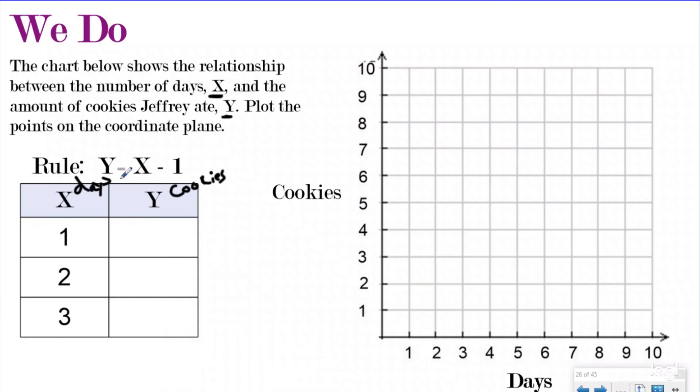Sometimes they're going to tell you what the pattern chart means. In one day, how many cookies did Jeff eat? So if X was one and I follow my rule of X minus one, one minus one is zero. So in one day, Jeff ate zero cookies. So let's go ahead and we can just graph that now. I'm going to shuffle over one and put my ordered pair right there.